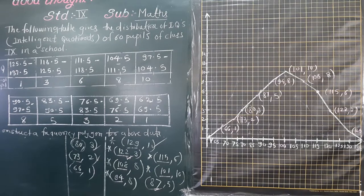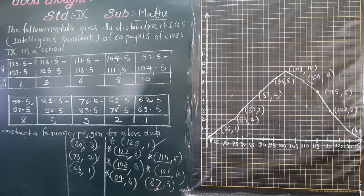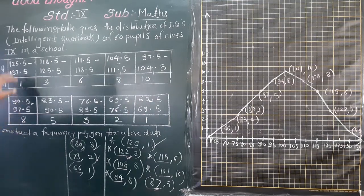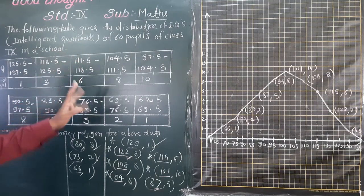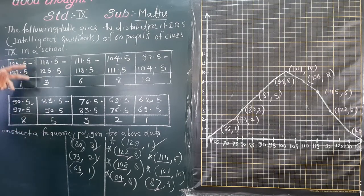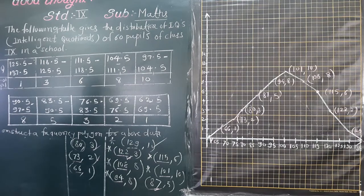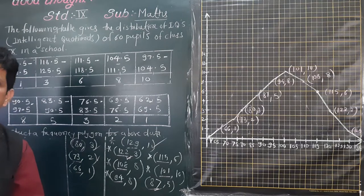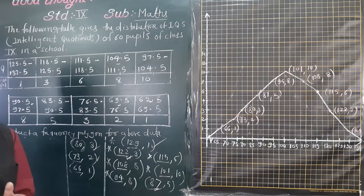So this is how you construct a frequency polygon for given data. Note that here the classes are discontinuous — but that's no problem, because we only need class marks, which are the averages of the intervals. Classes do not need to be made continuous for frequency polygons. You only need continuous classes when constructing a histogram first and then deriving the frequency polygon from it.